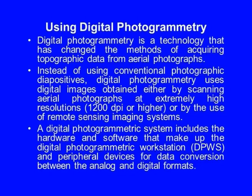The next technique is digital photogrammetry. Digital photogrammetry has changed the methods of acquiring topographical data from aerial photographs. Instead of using conventional photographic diapositives, digital photogrammetry uses digital images obtained either by scanning aerial photographs at extremely high resolution — about 1200 dpi or higher — or by the use of remote sensing imaging systems. A digital photogrammetry system includes the hardware and software making up the digital photogrammetry workstation (DPWS), and peripheral devices for data conversion between analog and digital formats.